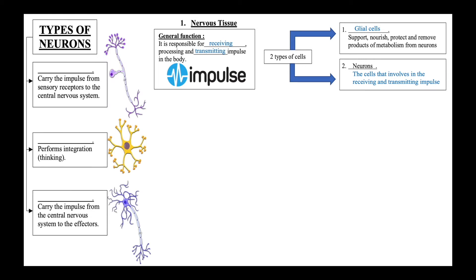The second type of cell that makes up the nervous tissue is the neuron. Neurons are the cells that actually transmit and receive impulses. There are three types of neurons. The first is the sensory neuron, or afferent neuron. Sensory neurons carry impulses from the sensory receptors towards the central nervous system. The central nervous system, which consists of the brain and spinal cord, is made up by the second type of neuron, known as the interneuron.